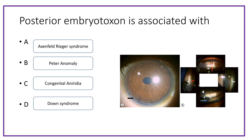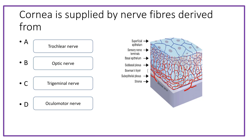Posterior embryotoxon is associated with option A: Axenfeld-Rieger anomaly; option B: Rieger's anomaly; option C: congenital aniridia; option D: Down syndrome. The answer is Axenfeld-Rieger anomaly. Next question: the cornea is supplied by nerves from the trochlear nerve, optic nerve, trigeminal nerve, or oculomotor nerve. The answer is the trigeminal nerve.